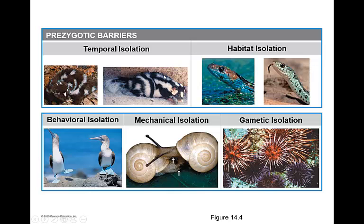So night owls and morning birds — a morning person and a night person — may not be able to find each other. Habitat isolation: here's a snake that lives in the water, here's a snake that lives on land. They're not going to be able to mate with one another because they live in different places and will never see one another. Behavioral isolation: one organism does some little dance display, and the other thinks, what the heck are you doing? They may do odd behaviors that the other organism may not find attractive.